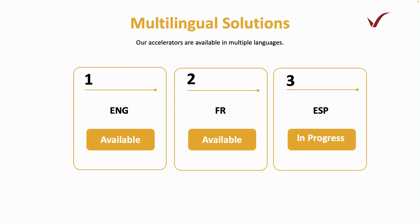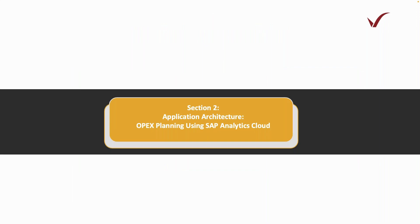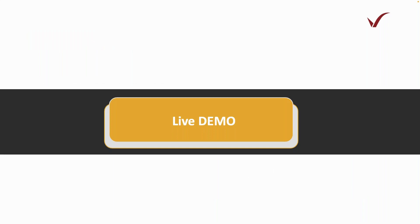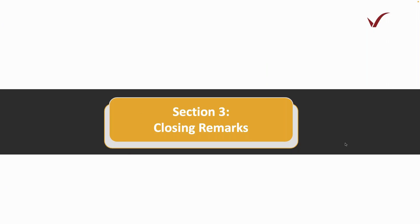We also offer the solution in three languages — English, French, and Spanish — as we expand our market scope. Now, moving to section two: the application architecture. OPEX covers expenses like rent, utilities, salary and wages, and raw materials. We have tried to incorporate all of this into a streamlined process, which I will now showcase in the live demo.